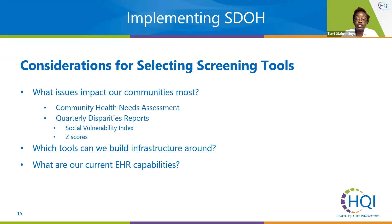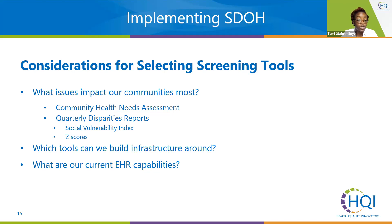When selecting a screening tool, think about what issues impact your communities the most. Aside from the required measures, you can utilize your community health needs assessment and quarterly disparities reports to decide on measures most important for your patient populations. Your EHR may have an integrated SDOH screening tool, which is always a place to start. Several common EHRs include templates with basic questions related to housing, education, employment status, and other social needs factors that can be used to document needs and communicate them to other team members.